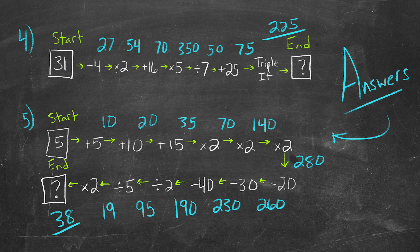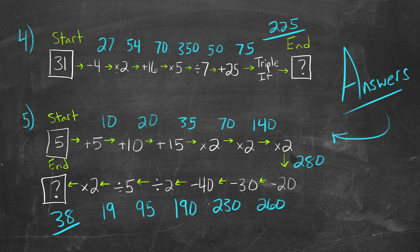For number four, we start with 31 — minus 4 is 27, times 2 is 54, plus 16 is 70, times 5 is 350, divided by 7 is 50, plus 25 is 75, and then we triple it — so that gives us 225.